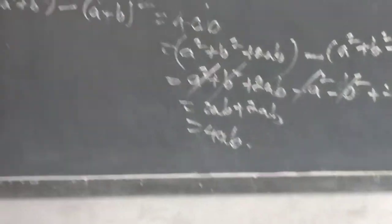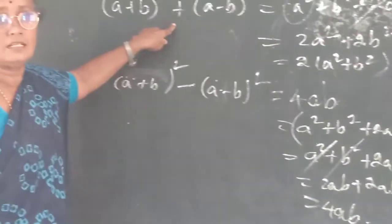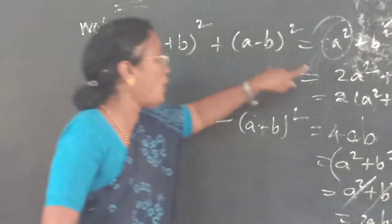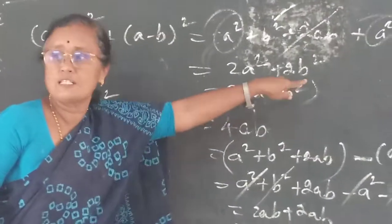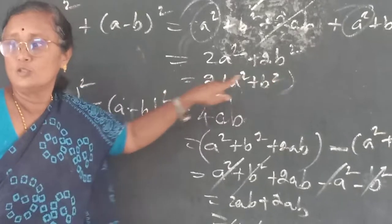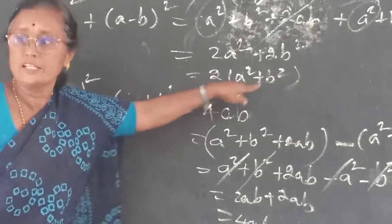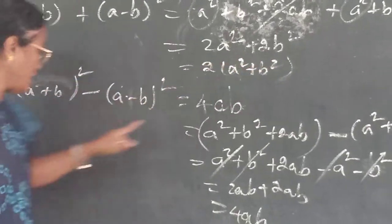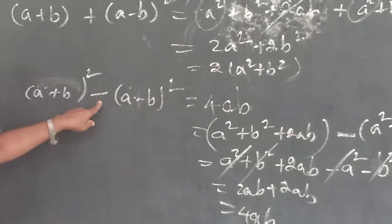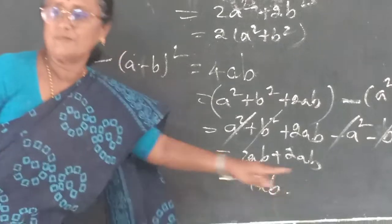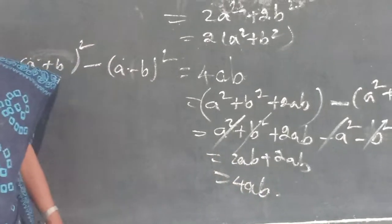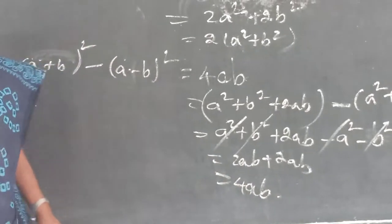So if it is plus, the result is twice a² + b², that is 2(a² + b²). If it is minus, the result is 4ab. Do you follow or not?